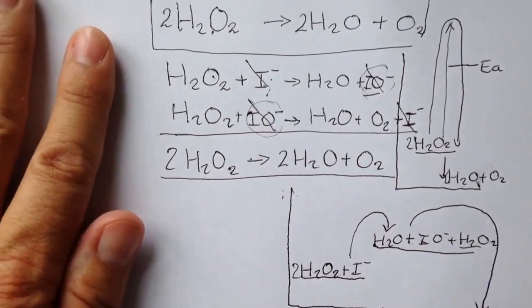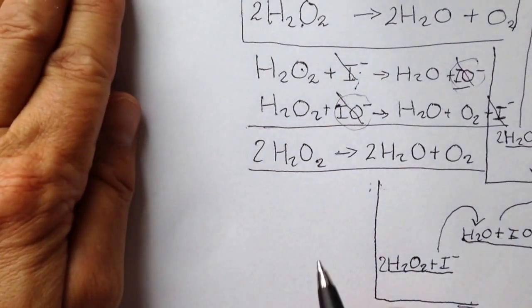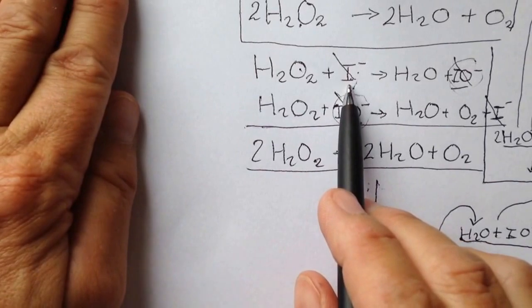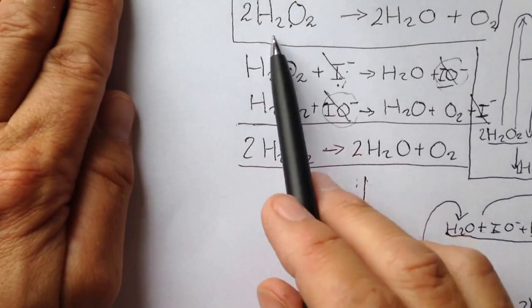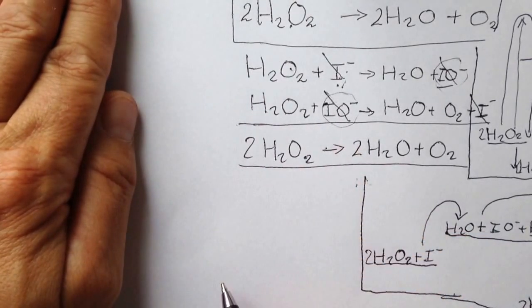The rate equation therefore is dependent on the concentration of iodide ions, because without the iodide ions, no matter how concentrated our peroxide was, it didn't matter.